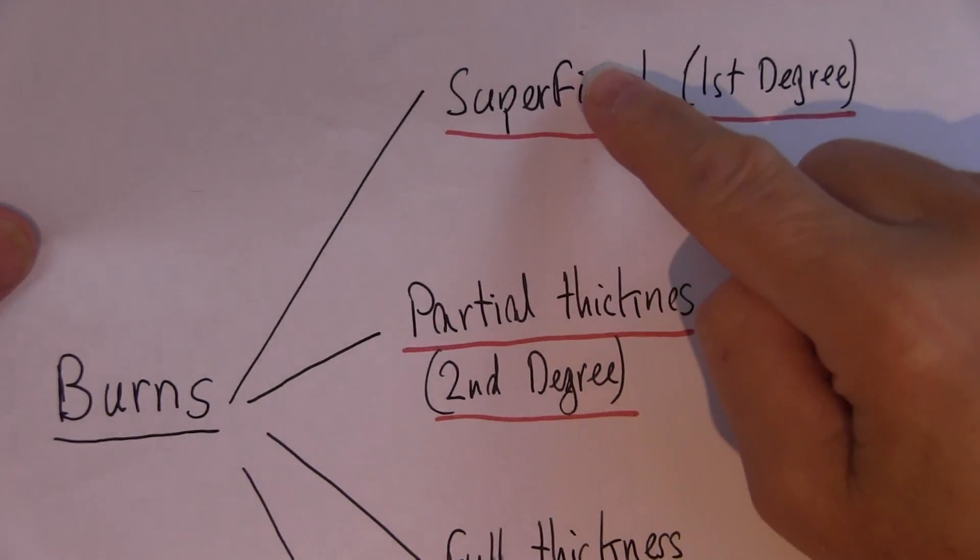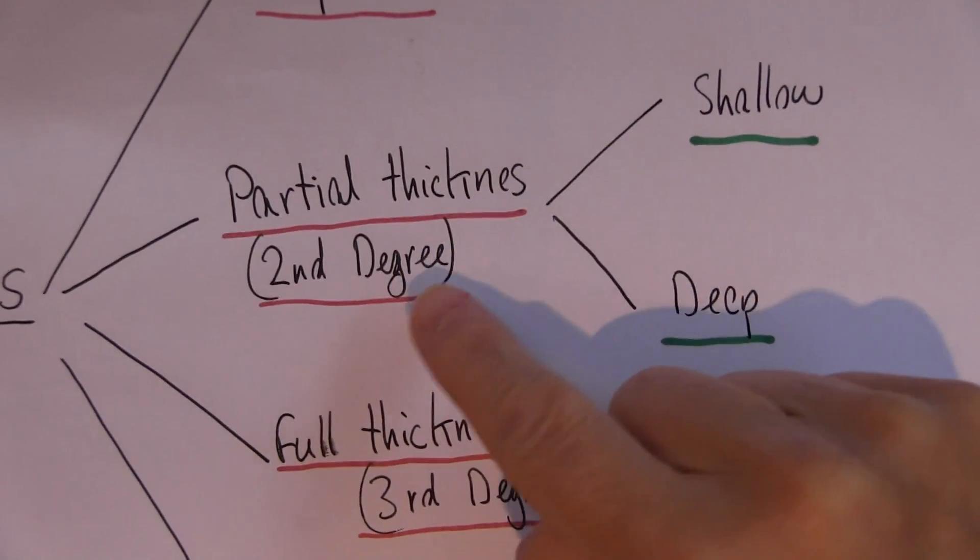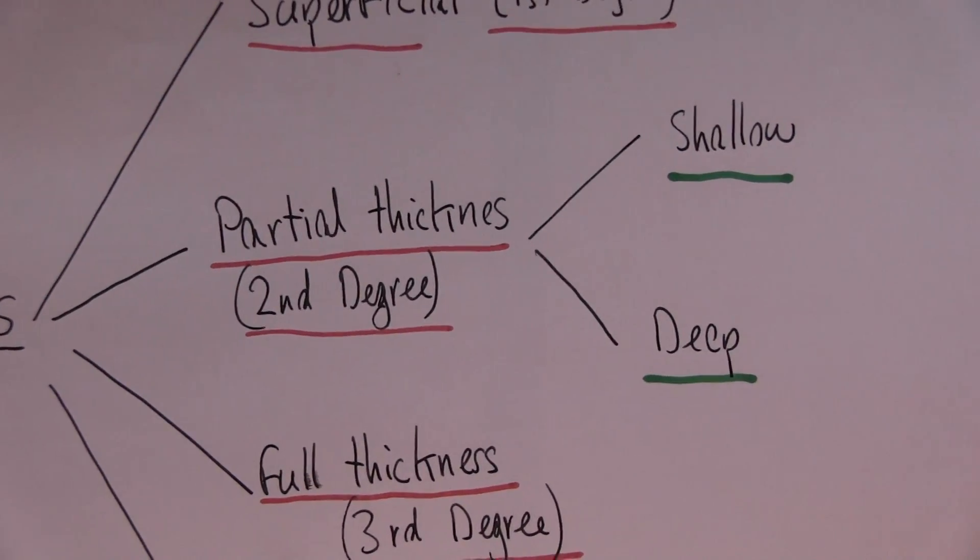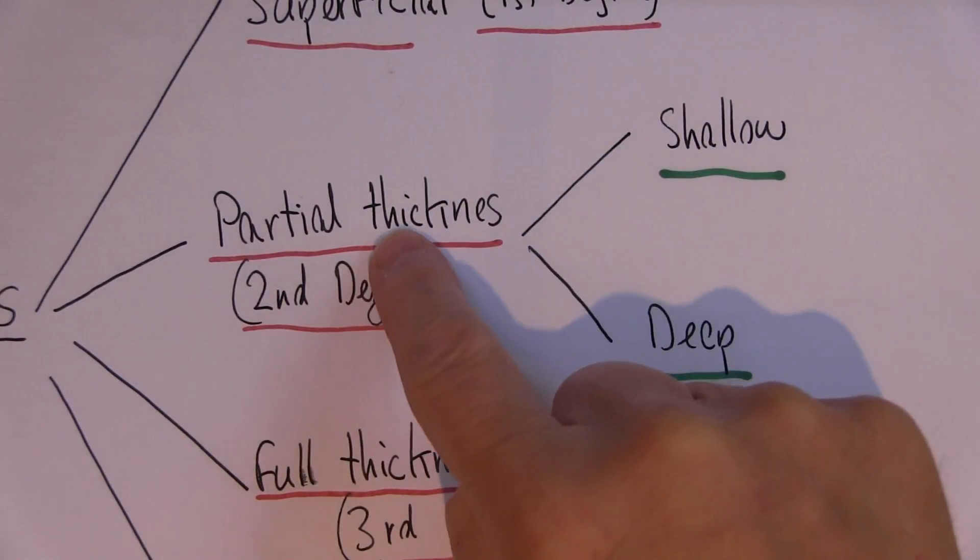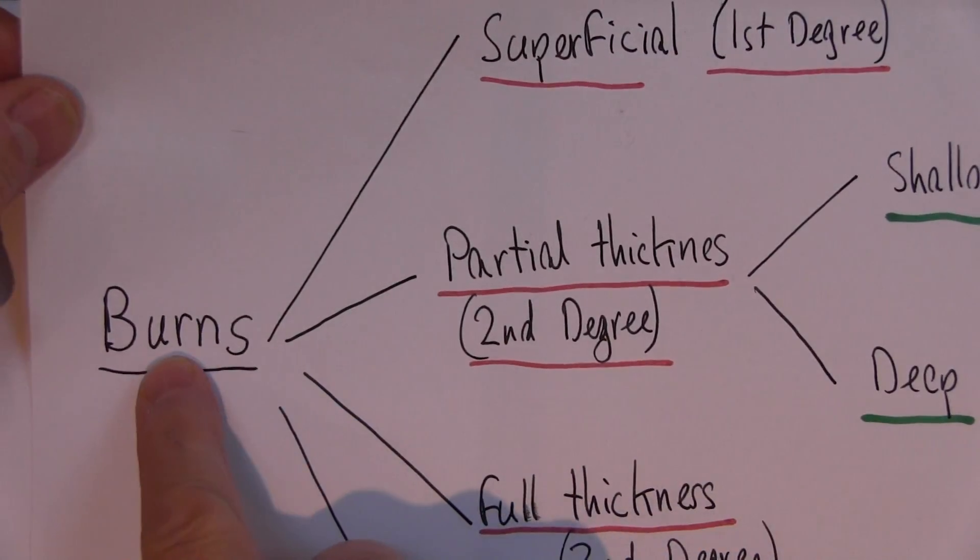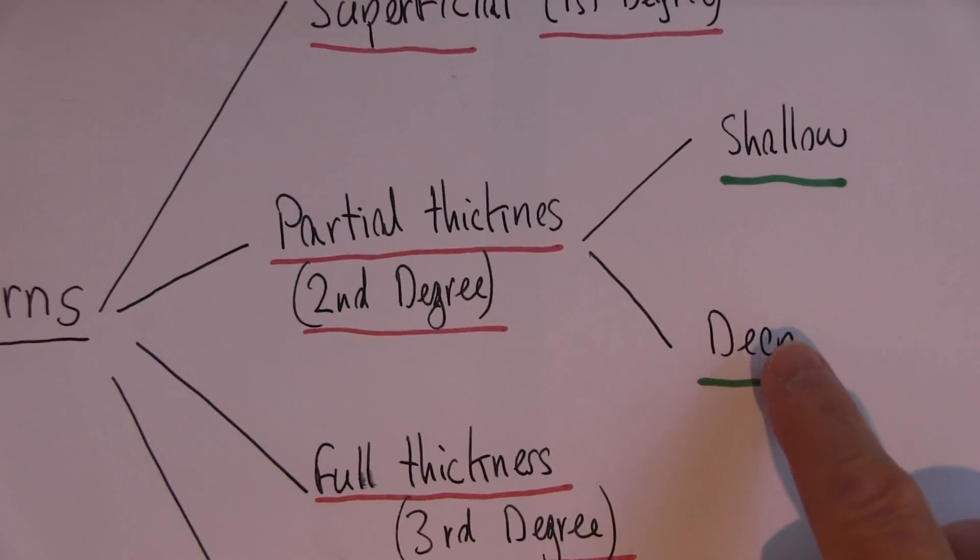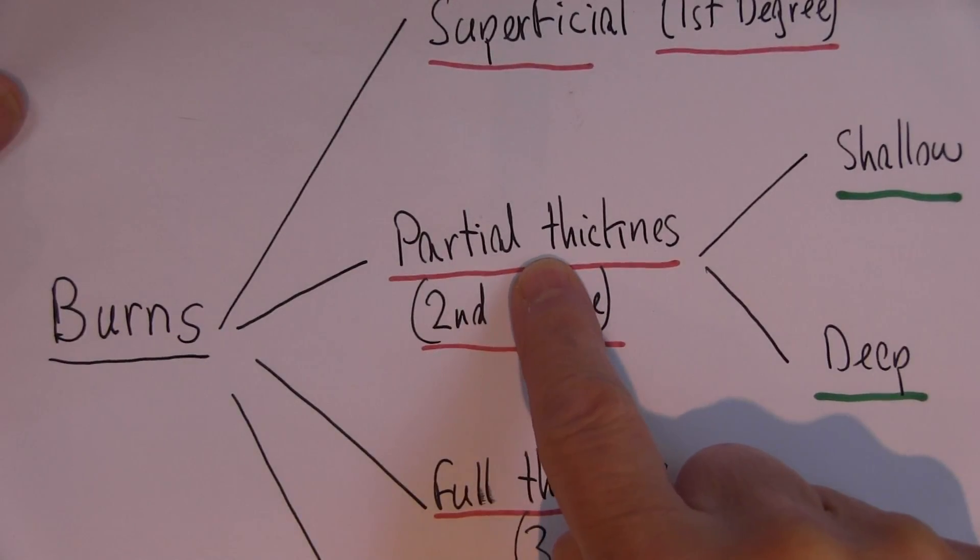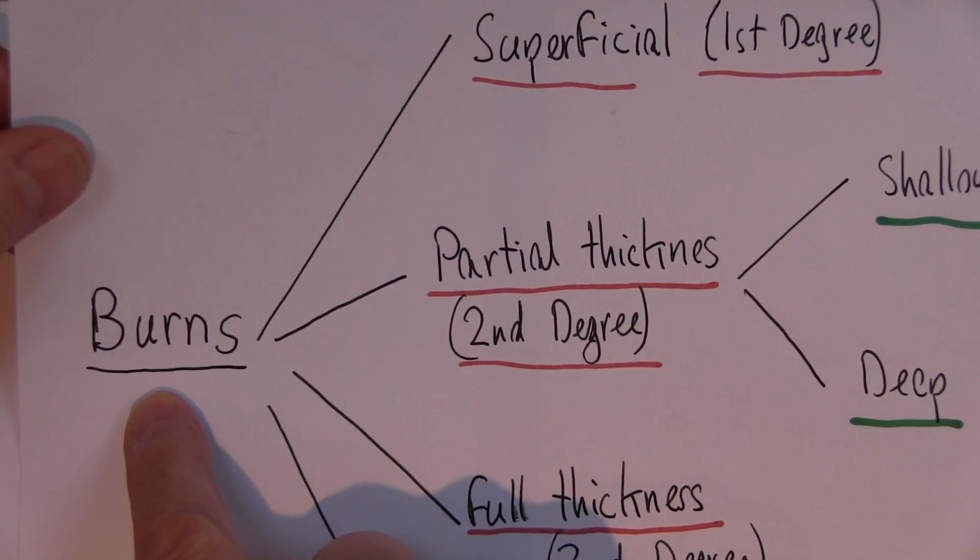So we've looked at superficial and we've started looking at partial thickness burns, and we've just looked at shallow partial thickness burns. Now we want to look at deep partial thickness or second-degree burns, and these are burns that are going to go deep into the dermis. So they are deep dermal burns.